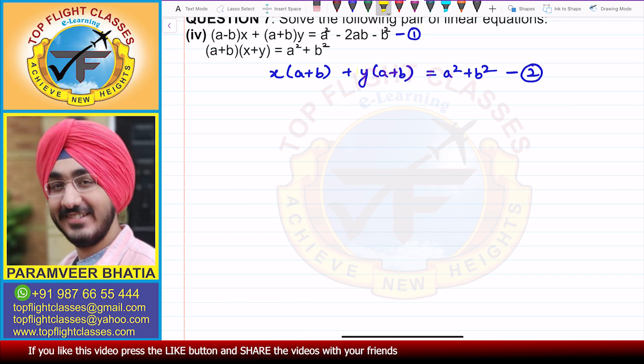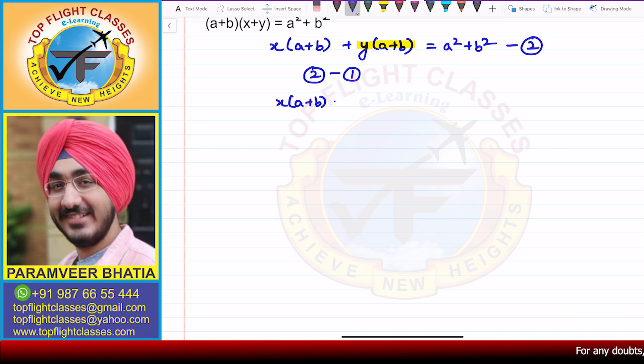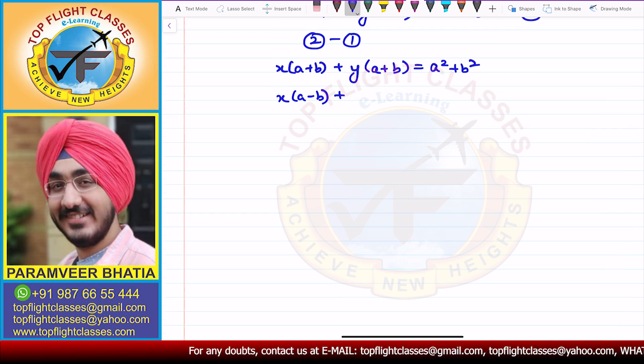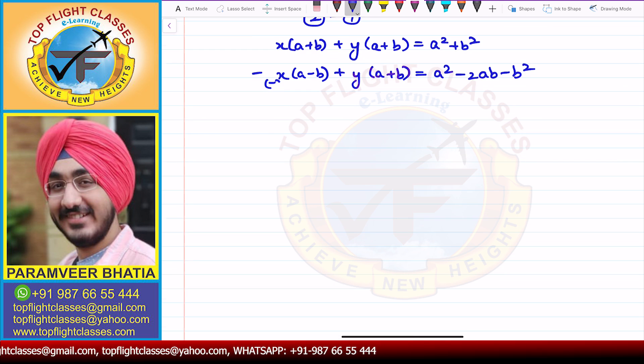So just subtract the two equations: equation 2 minus 1. We have x(a+b) + y(a+b) = a² + b², and the second one we have is x(a-b) + y(a+b) = a² - 2ab - b². So now you can subtract them. On subtraction, signs change.